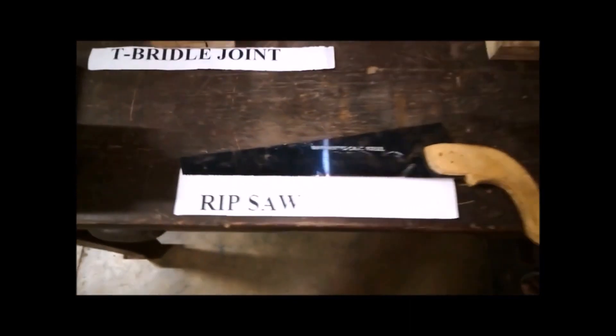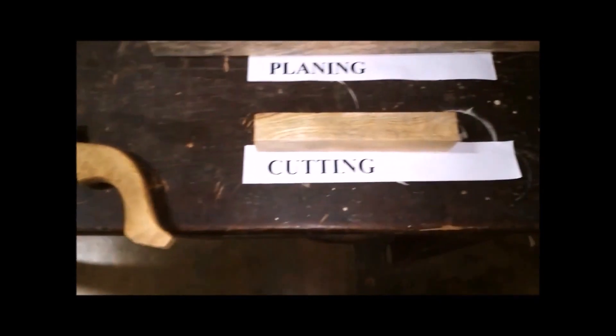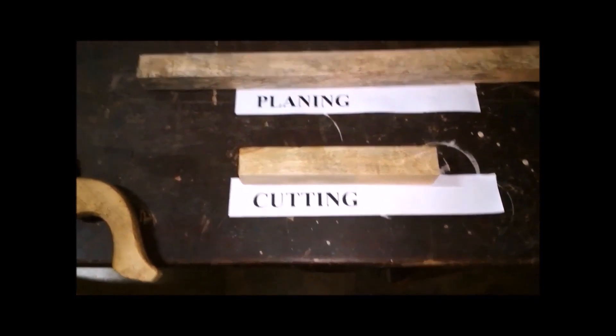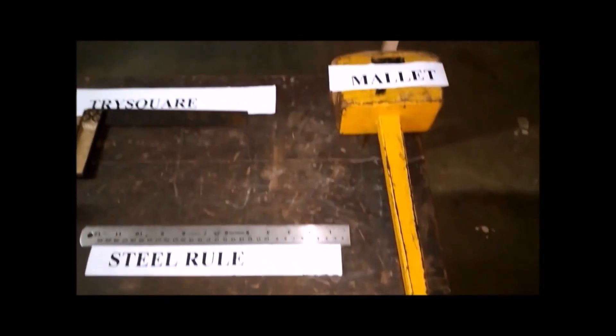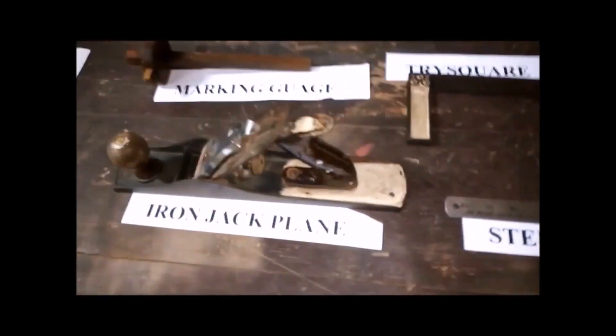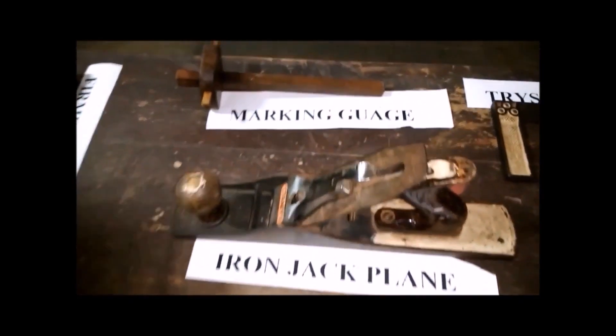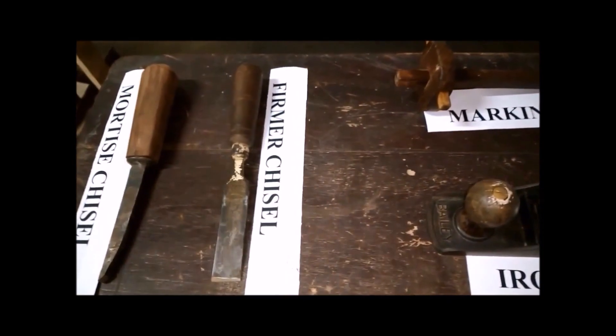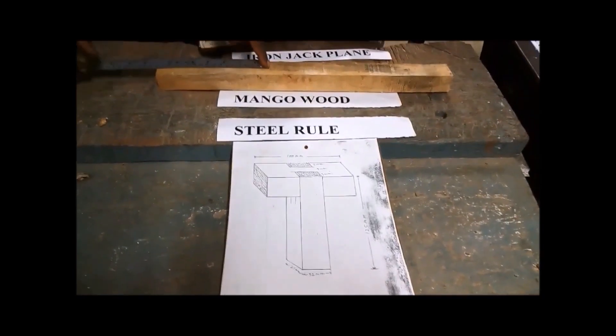Tools we need to cut the bridle joints: ripsaw, mango wood, steel rule, mallet, tri-square, iron jack plane, marking gauge, firmer chisel, mortise chisel, carpentry vise.